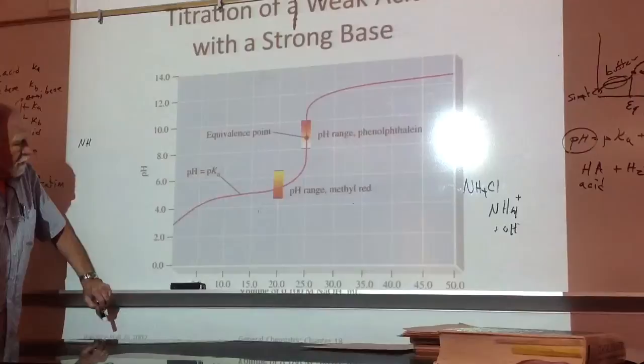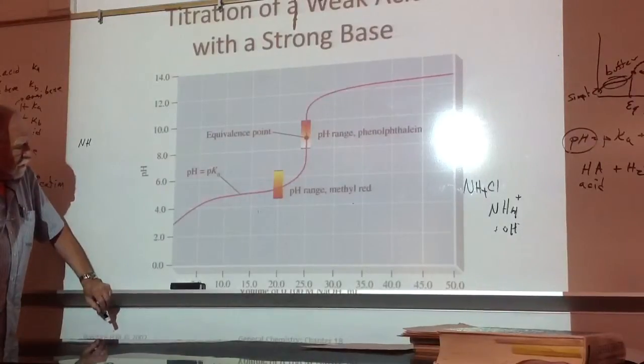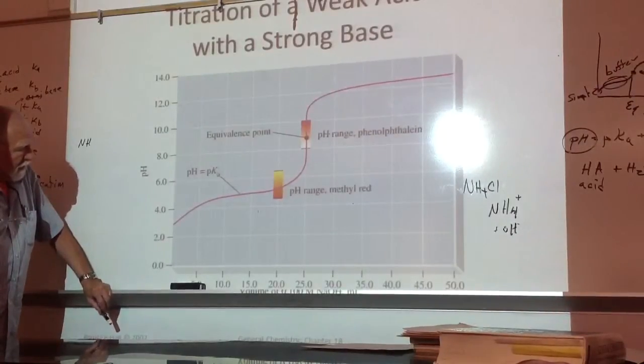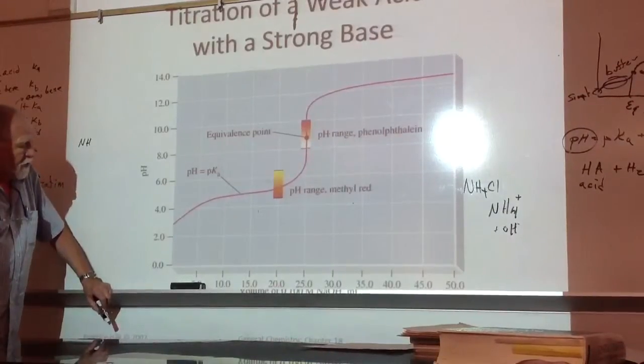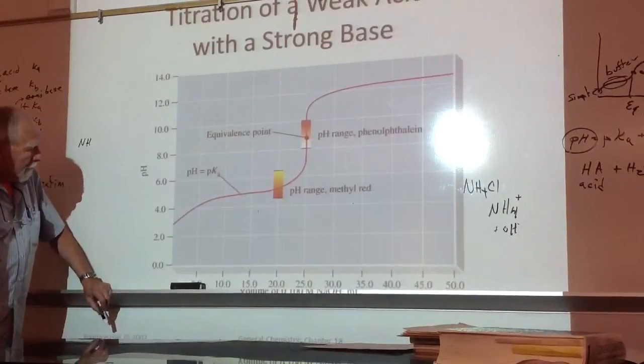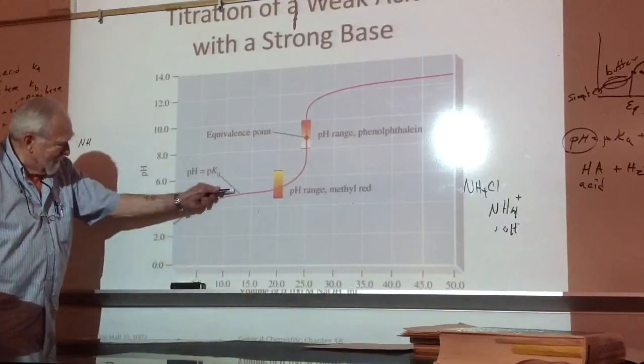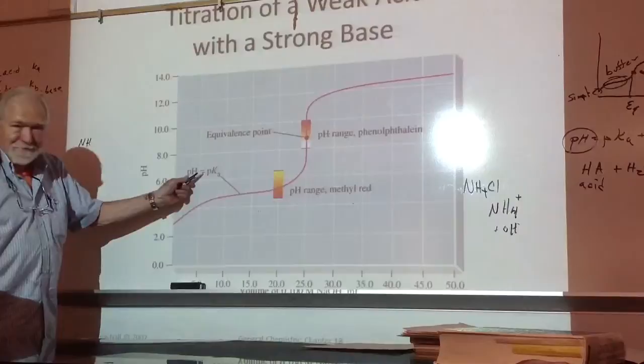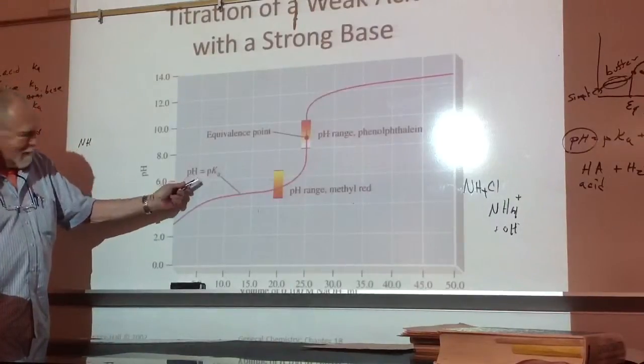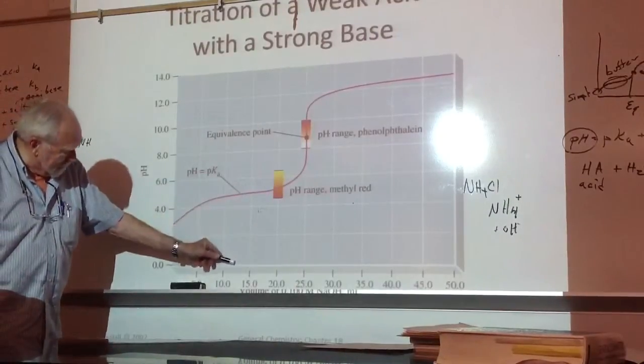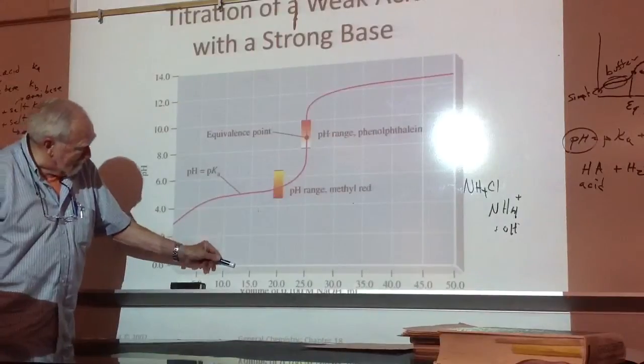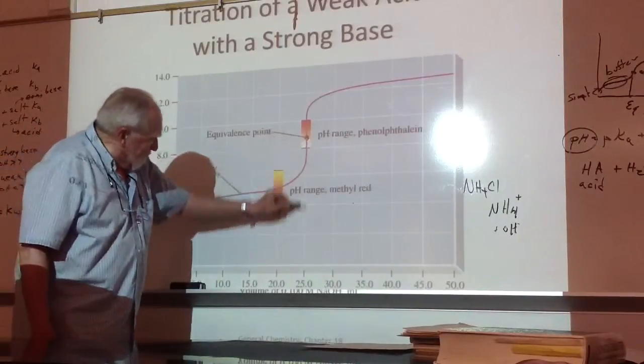And here, the choice of indicator is a little bit more critical. Methyl red has a smaller titration error than before. Oh, what point is this right here? It must be the half equivalence point. pH is equal to pKa. If you look at the volume, it's about 12 and a half. Equivalence point right here, 25.